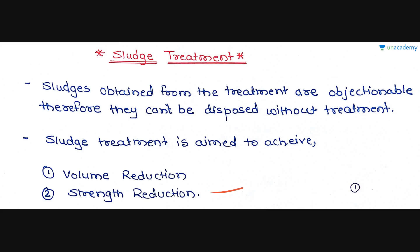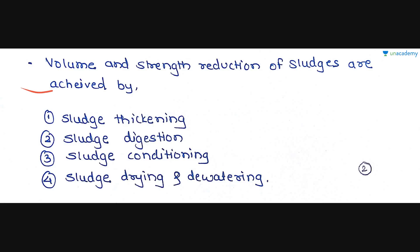Volume and strength reduction of sludge are achieved by four methods: first is sludge thickening, second is sludge digestion, third is sludge conditioning, and fourth is sludge drying and dewatering. We are going to see each of these one by one.